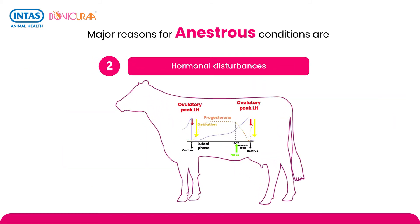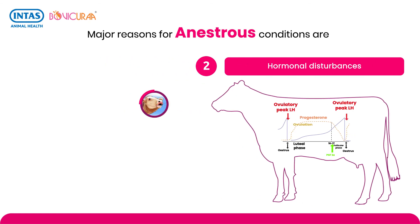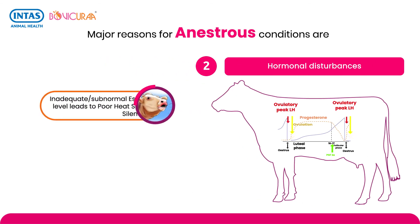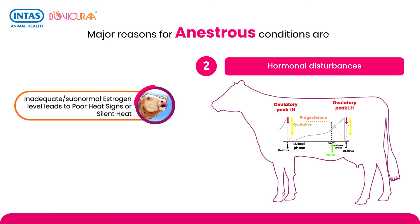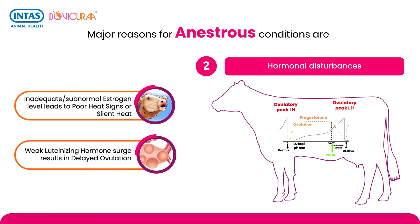Hormonal disturbances such as inadequate or subnormal estrogen levels lead to poor heat signs or silent heat. A weak luteinizing hormone surge results in delayed ovulation.